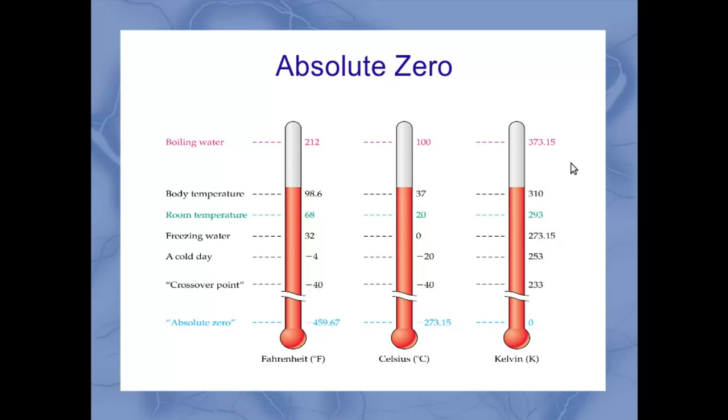It's the same 100 degree offset between those two points. So if I were to look at the size of a Celsius degree, it's the same as the size of a Kelvin degree.